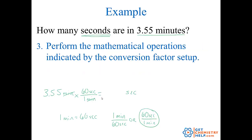Step three says: now that I've got it set up, go ahead and punch it into your calculator and perform whatever operations are indicated. So in my case, it's 3.55 times 60 divided by one. I put that on my calculator and got 213 seconds. So I just converted 3.55 minutes into 213 seconds — one unit to another.